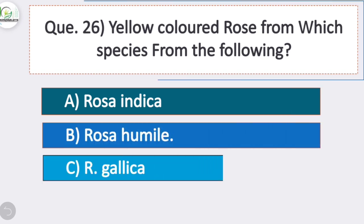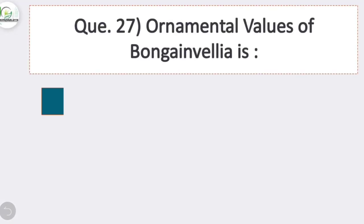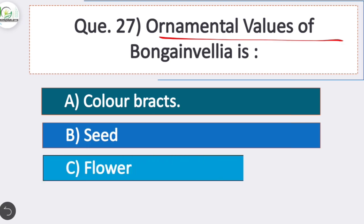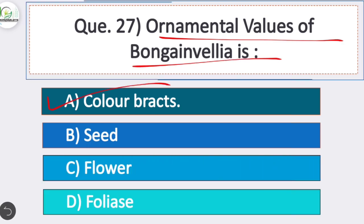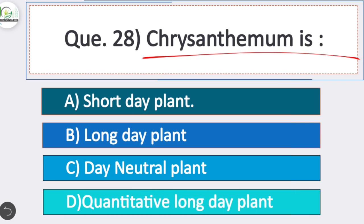Question 26: Yellow colored rose is from which species? Option B is correct — Rosa foetida (Rosa humile). Question 27: Ornamental value of Bougainvillea is — option A is correct — colored bracts. Question 28: Chrysanthemum is — option A is correct — a short day plant.